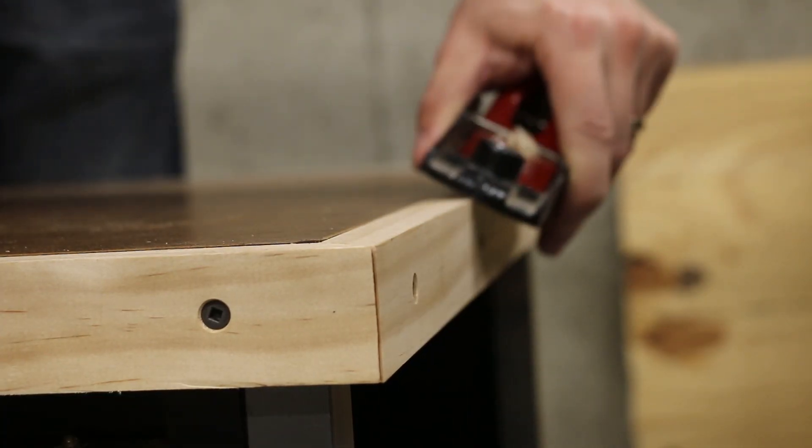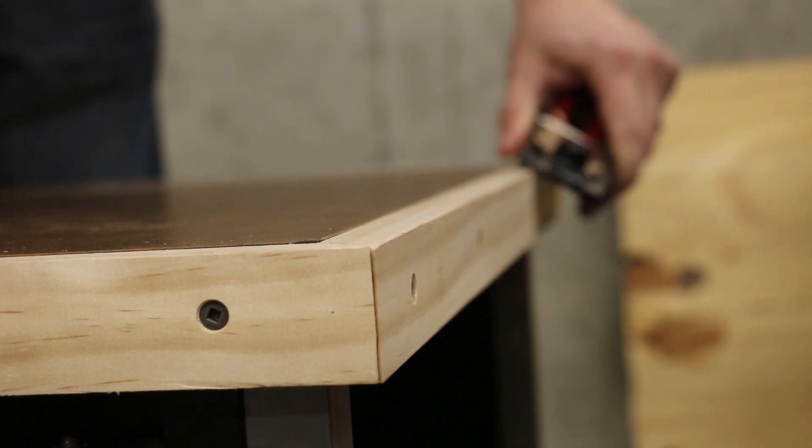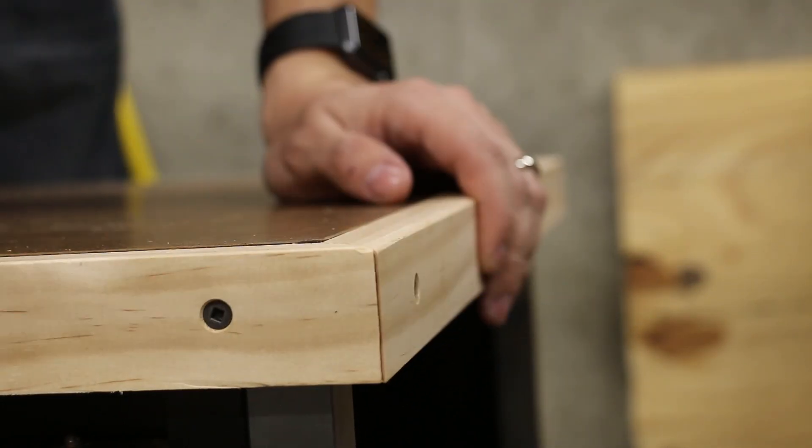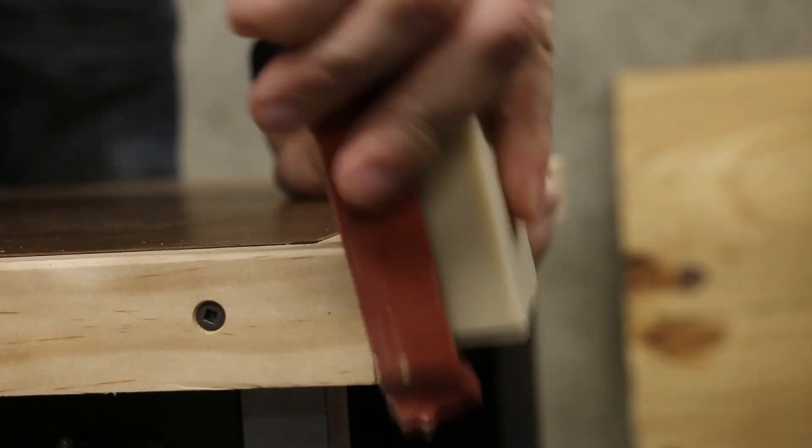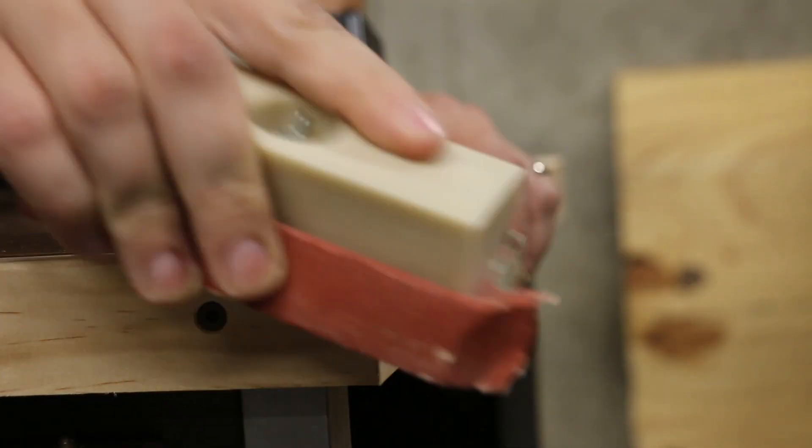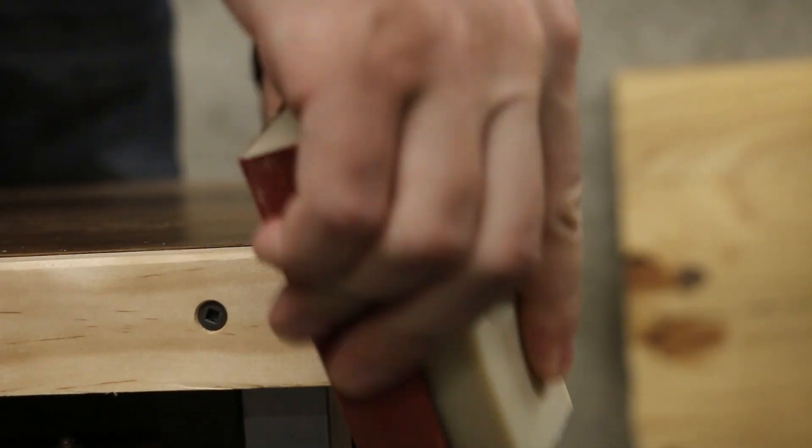And now with all the trim pieces on, I'll use a hand plane to round over the top corners. And I'll use some sandpaper to round over the side corners. Can't really use a plane on the sides because it's end grain and it doesn't cut as well.